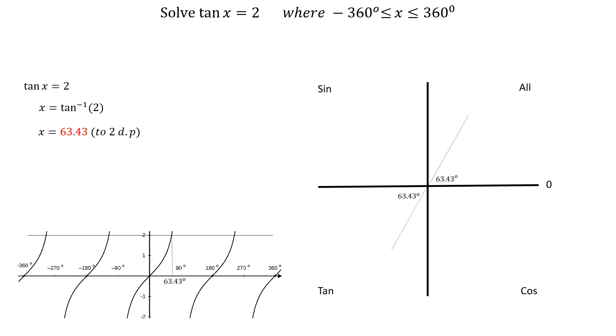Starting with x between 0 and plus 360 degrees, we go in an anti-clockwise direction. The first angle is at 63.43 degrees, and the second angle is at 180 plus 63.43 degrees, which is 243.43 degrees.